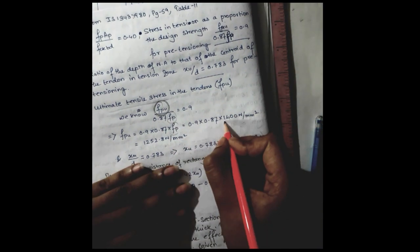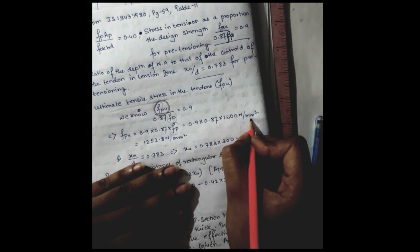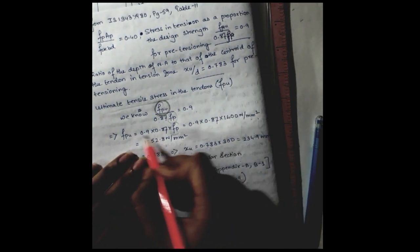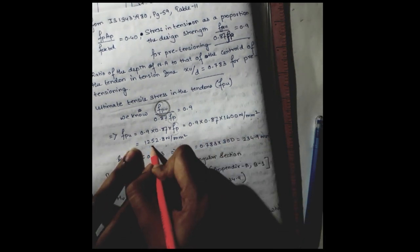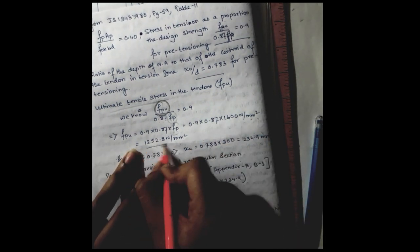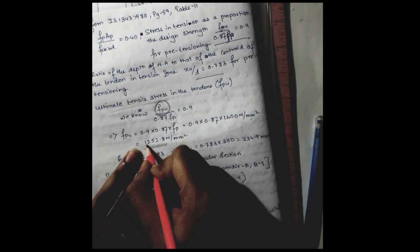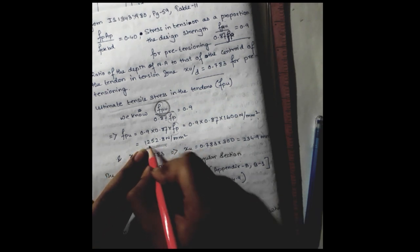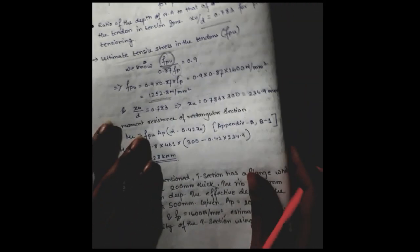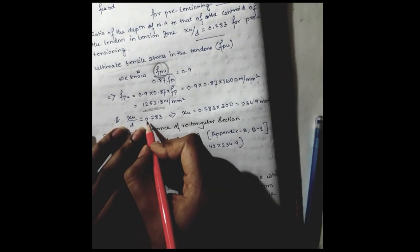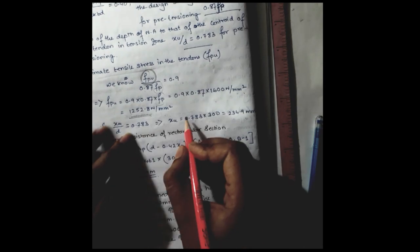So after multiplying all these numbers, we will get the ultimate tensile stress to be 1252.8 Newton per millimeter square. And xu by d, we already got 0.783.